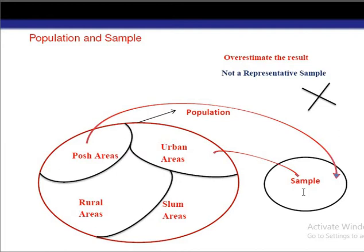That means we are getting a very high standard of living which is not the fact — it is not true. Here we are overestimating the standard of living. This sample is not a representative sample because it is considering only the posh and urban areas, totally ignoring the rural areas and slum areas. That means it is not considering all the characteristics of the population, and that's why it is not a representative sample.